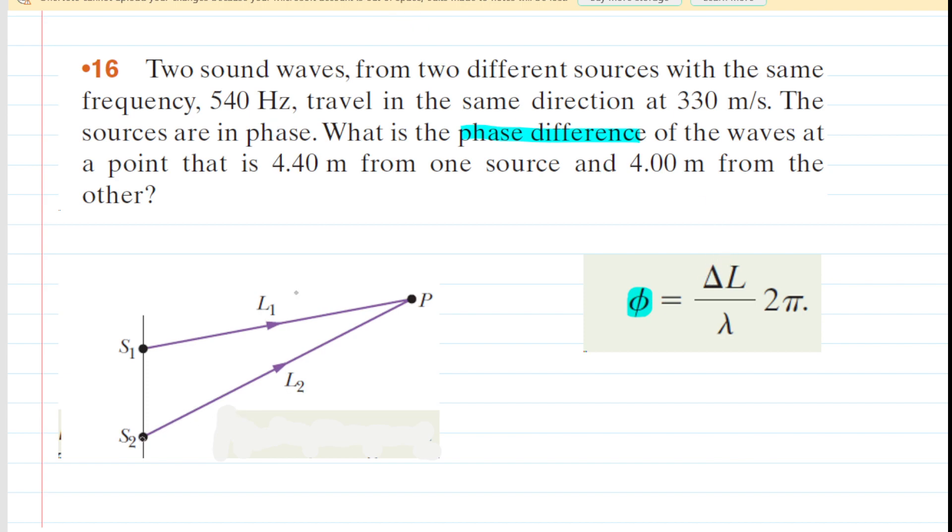Now, you can see that the second sound source is a certain distance from point P. We might call that distance the 4.4 meters indicated in the question. And then the other sound source is located at a different distance to point P, a shorter distance, which is only 4 meters.